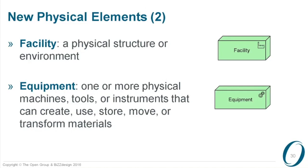First of all, we have added a concept called 'facility' — a physical structure or environment, typically where you will put your equipment. 'Equipment' is the next physical element; it can be any kind of physical machinery or instruments used to create, store, move, or transform materials. For example, if you're a farmer, a horse would be equipment just like a tractor is equipment — it might seem a bit strange but it works in that context. You can also model all kinds of smart devices with this, like devices in healthcare or a black box in your car.